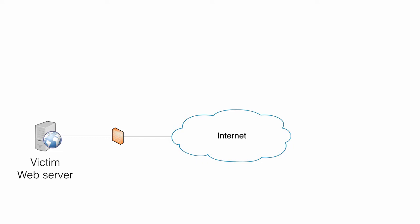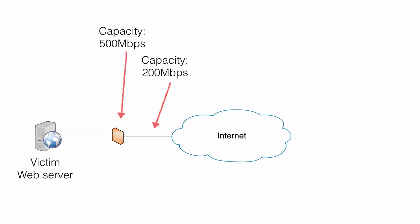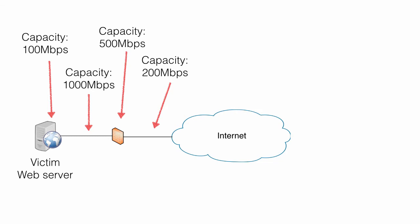The system is connected to the internet via a local internet connection with a bandwidth of 200 megabits per second. There is a firewall filtering and inspecting all traffic between the web server and internet, with a capacity of 500 megabits per second. The internal network has a capacity of 1 gigabit per second, and the web server itself can handle 100 megabits per second. The weakest link of the chain is the web server, with a capacity of 100 megabits.